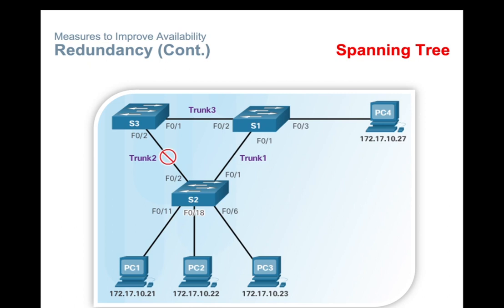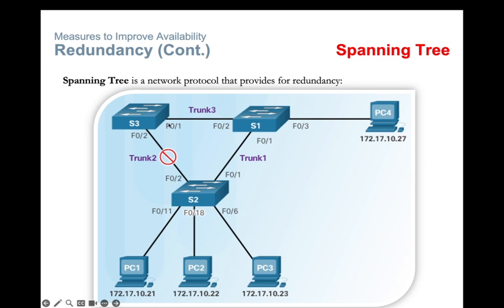STP disables these paths to prevent loops from occurring. If a network cable or switch fails, STP recalculates the paths and unblocks the necessary ports to allow the redundant path to become active. In the figure, you can see three switches — switch one, switch two, and switch three — which are physically connected to each other, creating a loop.